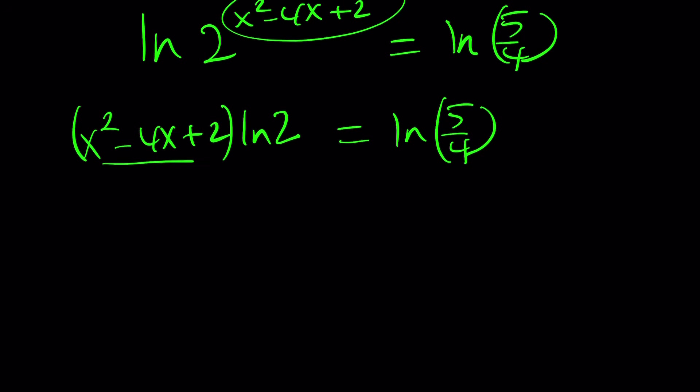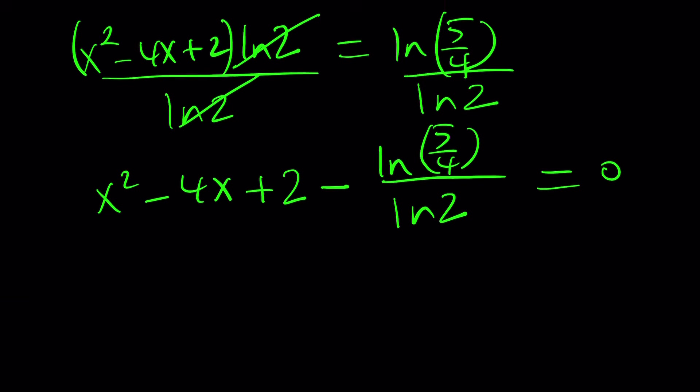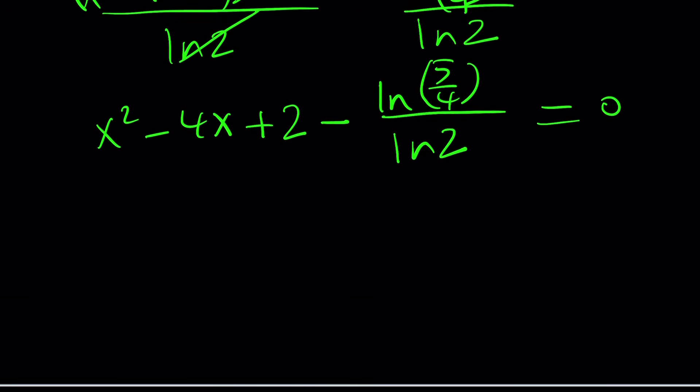I'll probably divide by ln two first, because I want to make this a monic quadratic, if you know what that means. So we can kind of write it as x squared minus four x plus two minus ln five fourths all over ln two. It's kind of like a weird number. And that's actually going to make up our constant along with the two. But notice that we did get a quadratic equation.